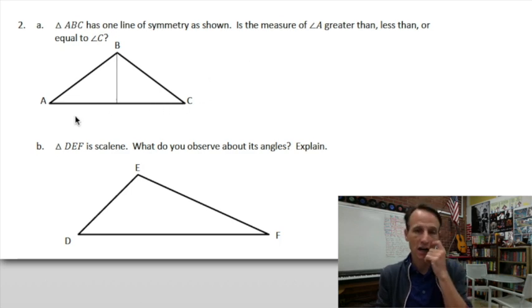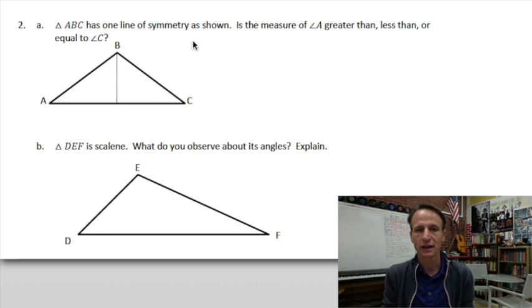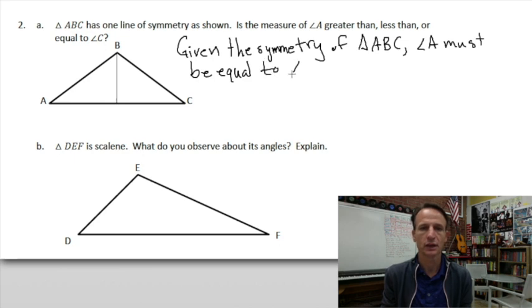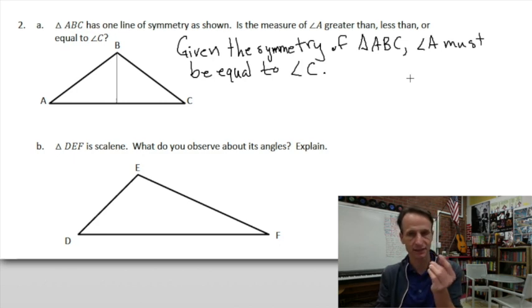We could also surmise that line segments AB and BC are of equal length, and this is an isosceles and obtuse triangle. Regarding the angles, they must be equal because this is by definition a line of symmetry. So given the symmetry of triangle ABC, then angle A must be equal to angle C.